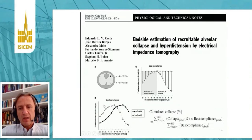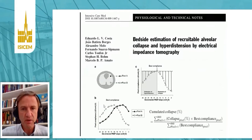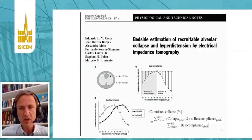A few years ago, there was this very important publication by Costa and collaborators, and they showed that it was possible to estimate the amount of collapse and hyperdistention in electrical impedance tomography with very good precision. In this preliminary paper, the concept was launched and they had some preliminary validation with CT.